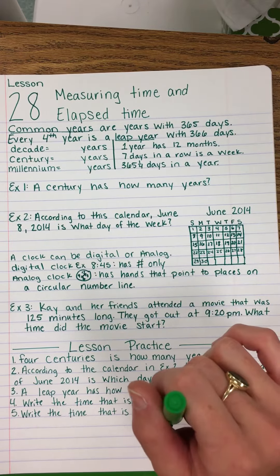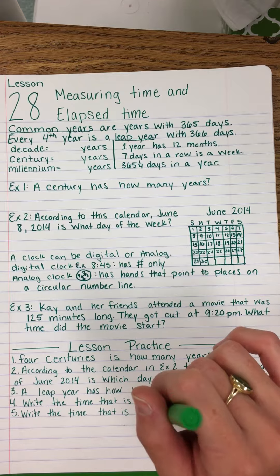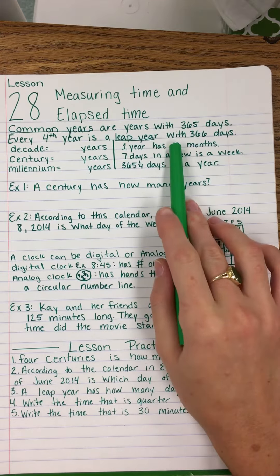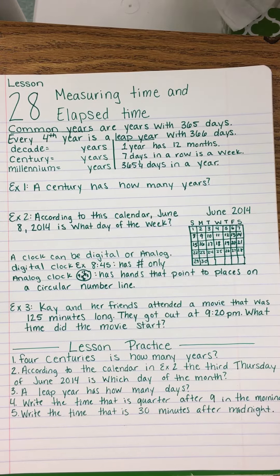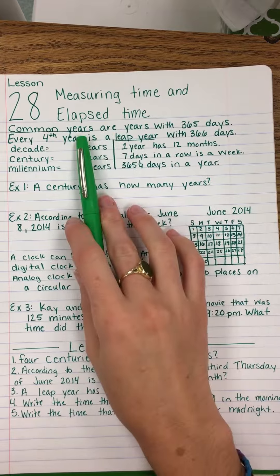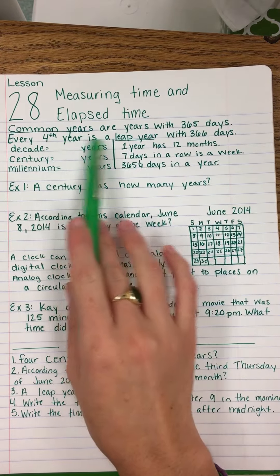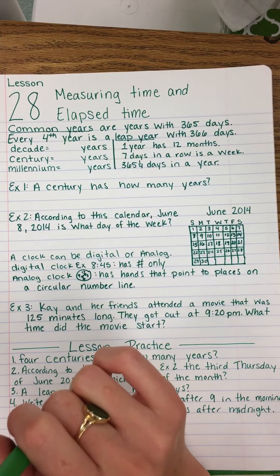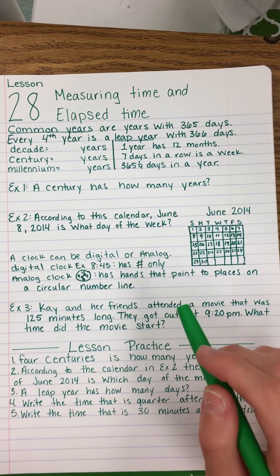Besides spinning on its axis, Earth also moves on a long journey around the sun. The time it takes to travel around the sun is called a year, and a year has 12 months. It takes actually about 365 and a fourth days, but we call a common year 365 days, and then every fourth year is a leap year with 366 days, since a year is actually 365 and one-fourth days.